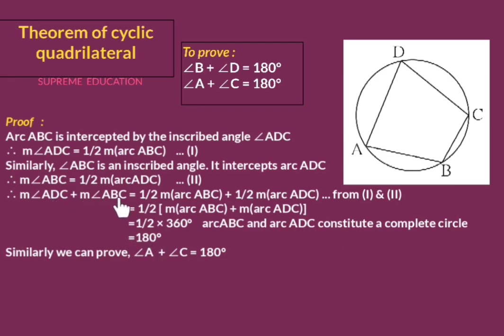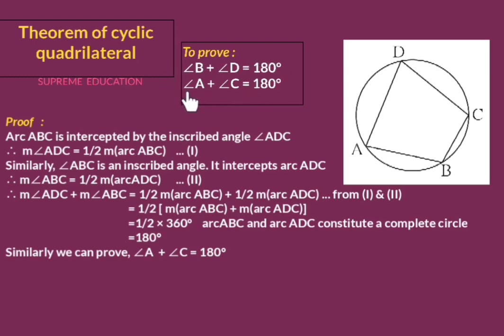Replacing the bracket with 360 degrees — since arc ABC and arc ADC constitute a complete circle — we get half of 360, which equals 180 degrees. Therefore, major angle ADC plus major angle ABC equals 180 degrees, meaning angle D plus angle B equals 180 degrees. Similarly, we can prove angle A plus angle C also equals 180 degrees. In this way we have proved the theorem of cyclic quadrilateral.